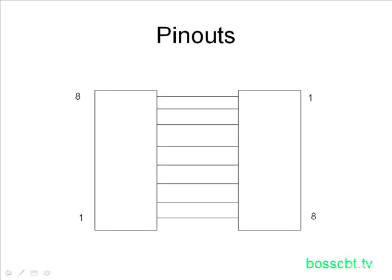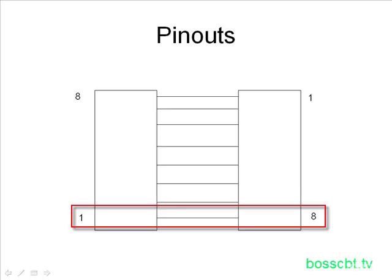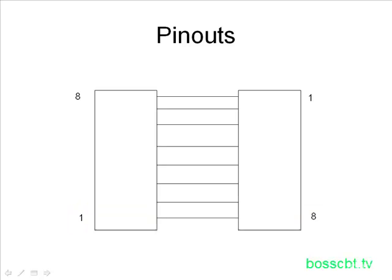This is a diagram of the pinouts of a rollover cable. The two boxes at the end are the connectors — for now, let's assume these are two RJ45 connectors. There are eight wires in the cable. On the left-hand side they're numbered from the bottom starting at one up to eight, but on the right-hand side they start at number one at the top and go down to eight at the bottom. The pinouts are the exact opposite on each side — pin one on the left goes to pin eight on the right, two goes to seven, three goes to six, and so on. They're completely rolled over, which gives you an indication of the name.